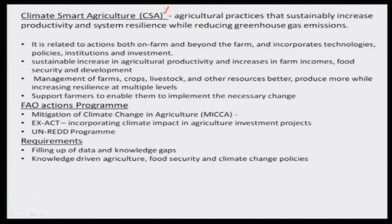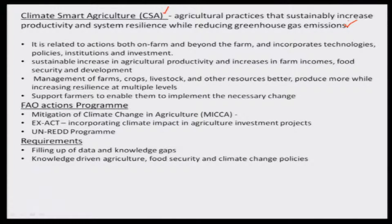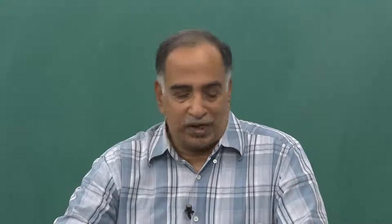What does climate smart agriculture mean? It means following the same agriculture practices that can sustainably increase productivity by reducing and complying with climate-related impacts — like reducing water use, reducing greenhouse emissions which cause climate change, and also reducing usage of fertilizers. That means agriculture practices need to get adopted to the forthcoming climate change impacts.